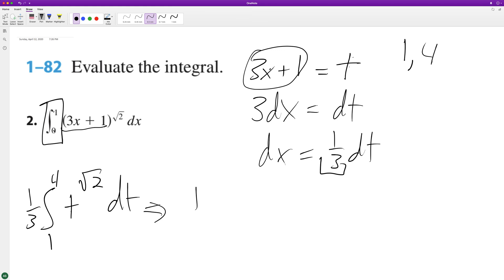When we integrate, we get one-third times t raised to the square root of 2 plus 1, divided by square root of 2 plus 1.